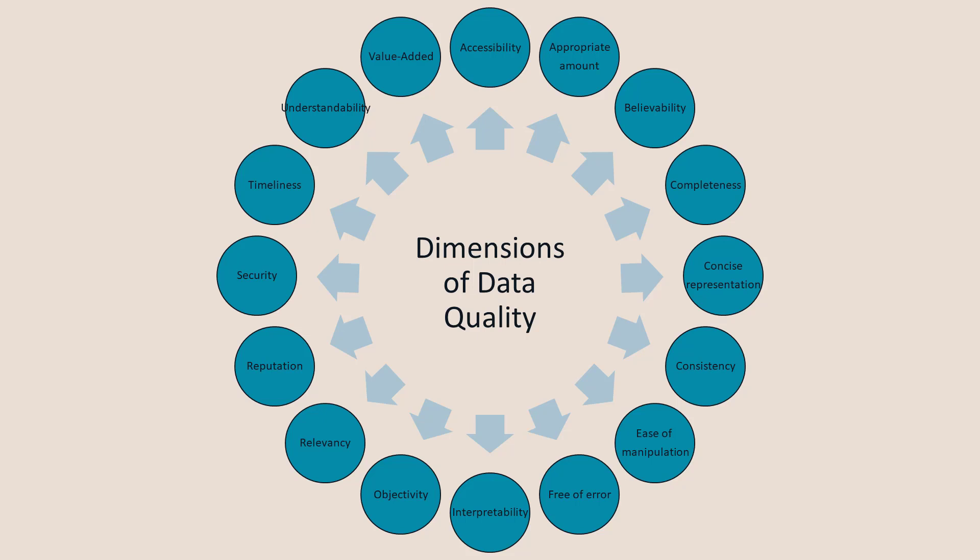These 16 dimensions of data quality come from an ACM article by Leo Pipino and colleagues. They show how data quality — which is the ability to satisfy the information needs of the consumer — can be measured from several different dimensions. Some of these dimensions, depending on the information need of the consumer, may be more or less relevant.